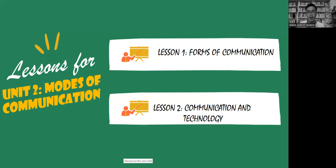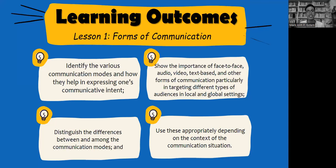This unit is composed of two lessons: forms of communication, and communication and technology. Let's start with the learning outcomes of Lesson 1: Forms of Communication. First, identify the various communication modes and how they help in expressing one's communicative intent. Second, show the importance of face-to-face, audio, video, text-based, and other forms of communication, particularly in targeting different types of audiences in local and global settings. Third, distinguish the differences between and among communication modes. And last, use them appropriately depending on the context of the communication situation.